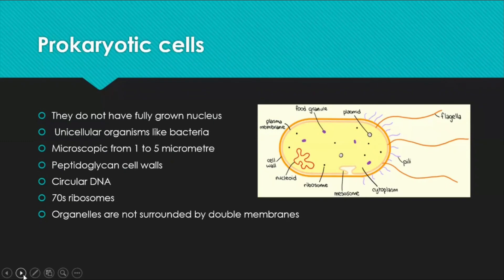Prokaryotic cells have undeveloped nuclei. Unicellular organisms like bacteria have prokaryotic cells and are usually small in size — 1 to 5 micrometers. Their cell walls are made of a material called peptidoglycan. They have no nucleus, so the DNA exists in a circular form free in the cytoplasm. Unlike eukaryotic cells, prokaryotes have 70S ribosomes, and their organelles are not surrounded by a double membrane.